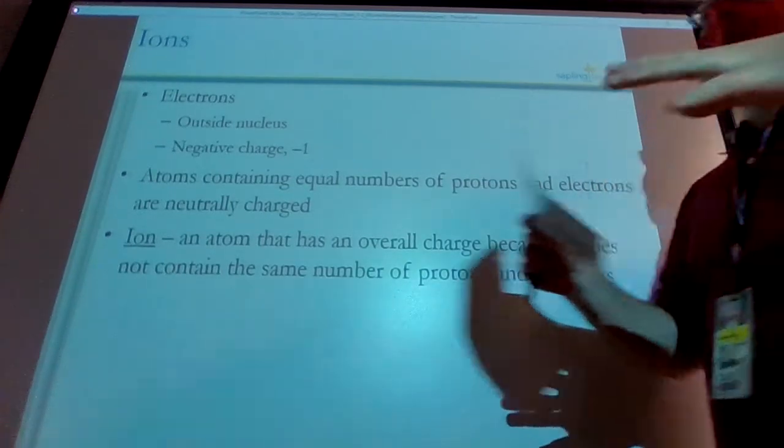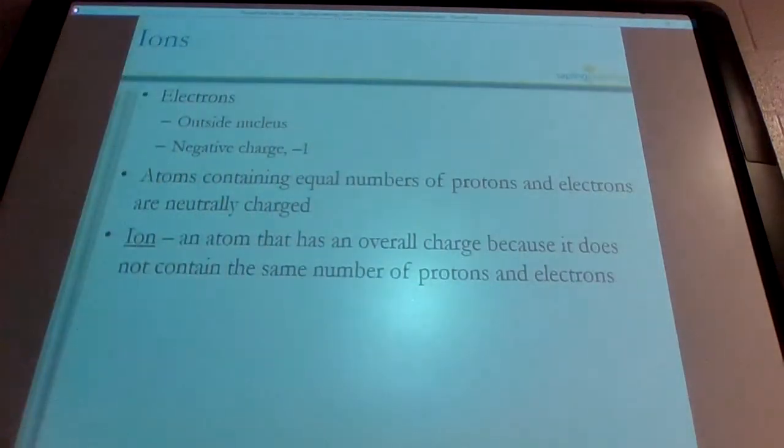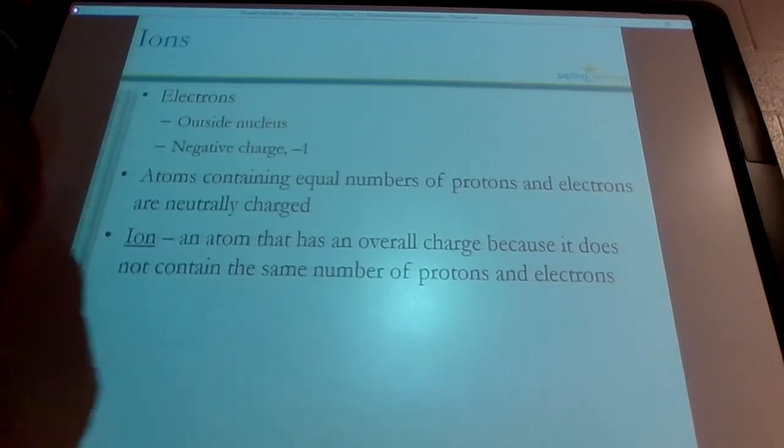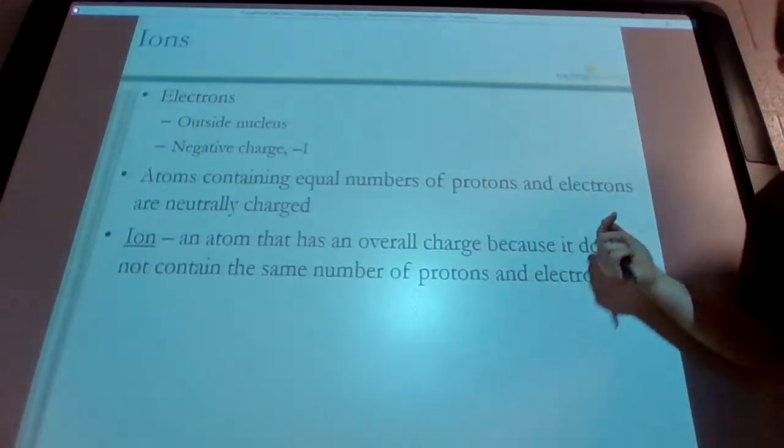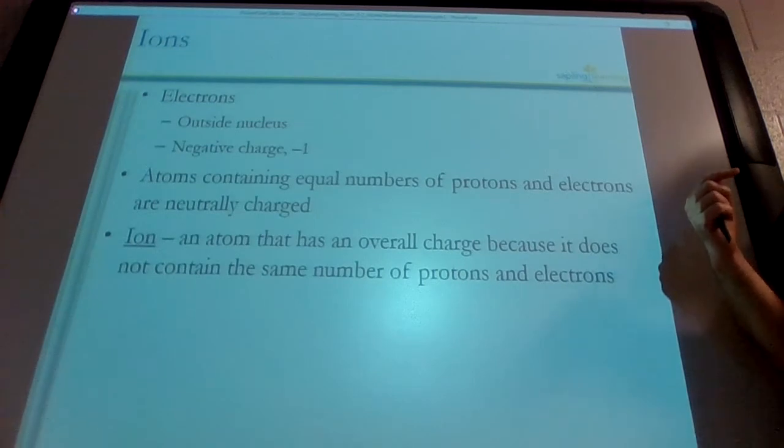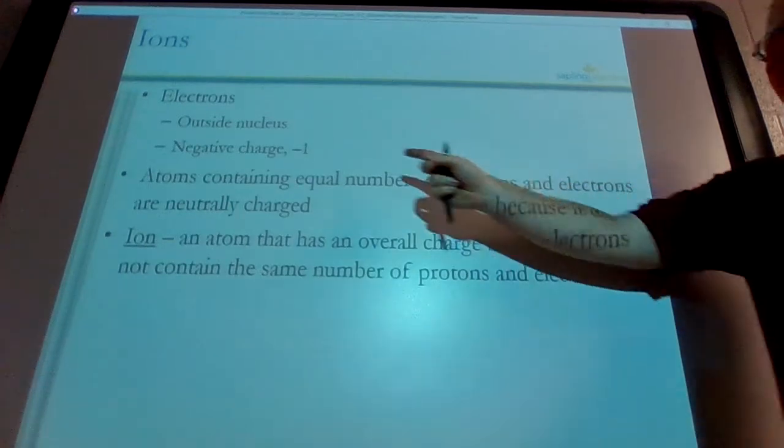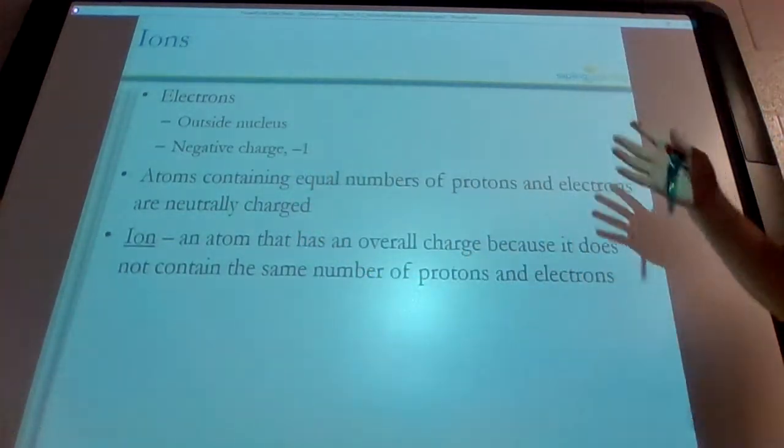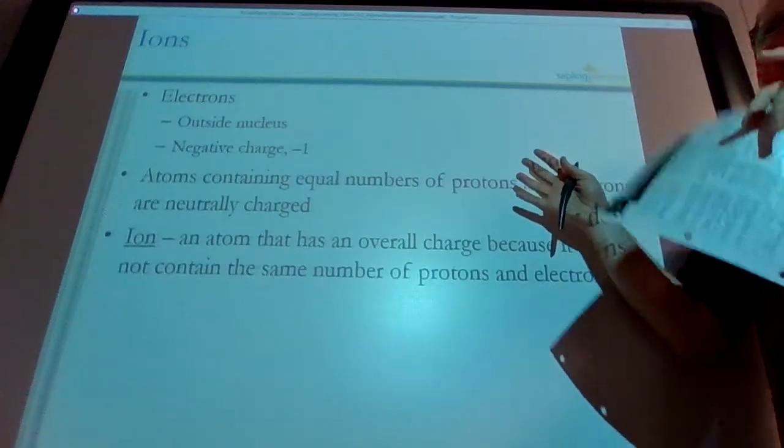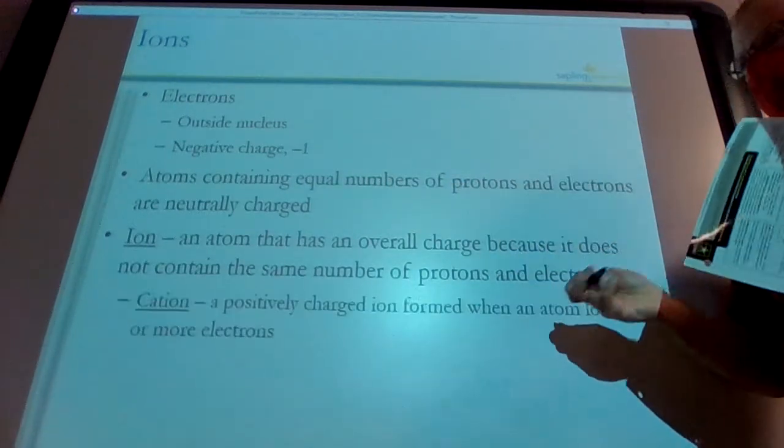So if I have six protons in that carbon atom, but only four electrons, I'm going to have a plus two charge. Because I have two extra protons more than that number of electrons. If I go the other way and I have six protons and eight electrons, I'm going to have a minus two charge. Because I have two extra electrons, which are negative charges. So whichever you have more of and how many more you have determines what your charge is.